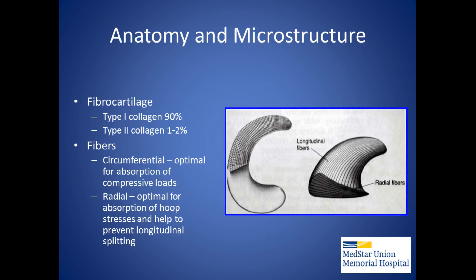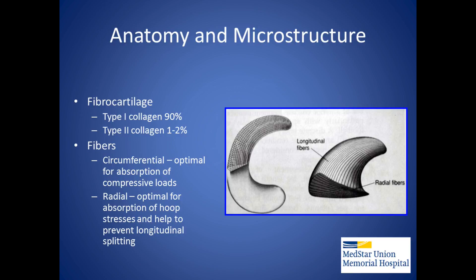The menisci are made primarily of type 1 collagen and are composed of both circumferential and radial fibers, which work in conjunction in distributing stress across the knee joint. The menisci function in shock absorption by undergoing elongation as load is applied, load transmission by increasing the surface area, and joint stability by increasing joint conformity.